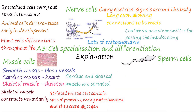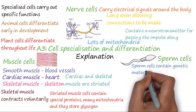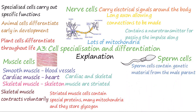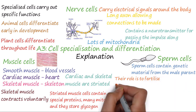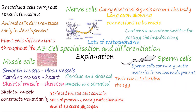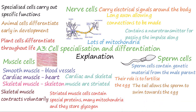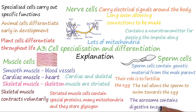Sperm cells contain the genetic material from the male parent, and their role is to swim through the female's reproductive system to reach, and then fertilize, the egg. Sperm cells have a large nucleus carrying the male's genetic information. They also have a long, whip-like tail, allowing them to swim towards the egg, and contain many mitochondria to provide the energy required for the tail to work. The head of the sperm cell contains an acrosome, which contains digestive enzymes to break down the outer layers of the egg cell, allowing fertilization to occur.